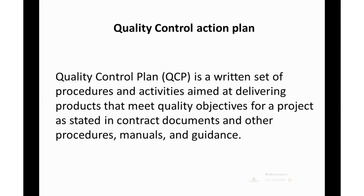The second topic is the quality control action plan. The quality control plan is the plan which is dealt with when you are working on a product — that is, how you will meet the quality objectives and procedures when you are making a product.